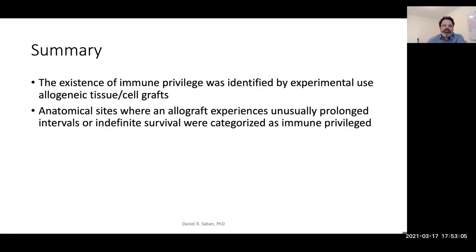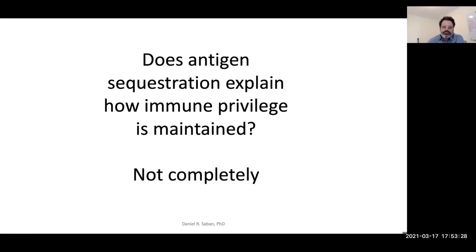To summarize this first part: the existence of immune privilege was identified by experimental use of allogeneic tissue grafts. Anatomical sites such as the anterior chamber, where an allograft experiences unusually prolonged or indefinite survival, categorizes immune privilege. The other important question is whether this is immunologic ignorance or sequestration of antigen — is the transplant in the anterior chamber allowed to survive solely by being sequestered from the systemic immune apparatus? The answer is not completely.